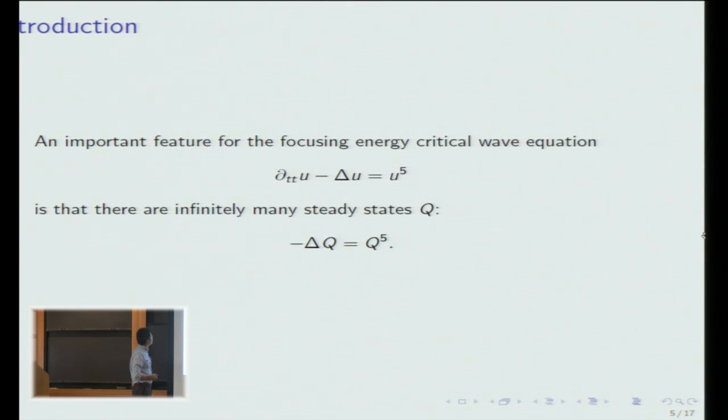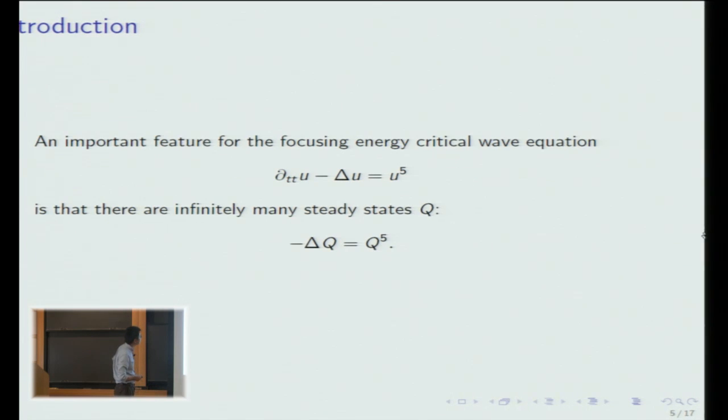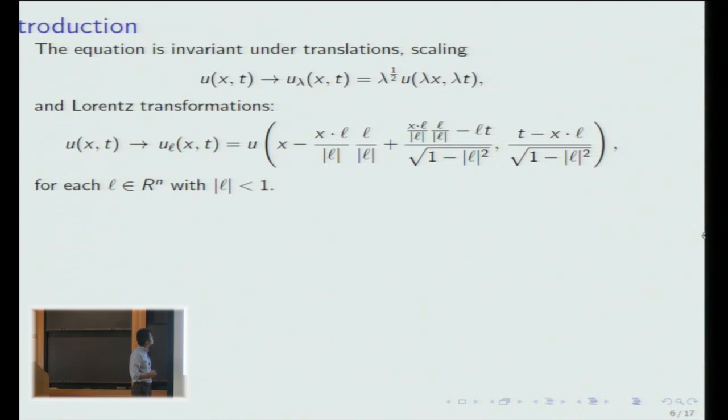An important feature for this equation is that you have infinitely many steady states, which are just time independent solutions. So these solutions do not decay over time. This is opposite to the linear dispersion phenomenon. These solutions, they don't decay at all. So the equation comes with natural conserved energy and you want to make things scale in the right way so the energy is scale invariant.